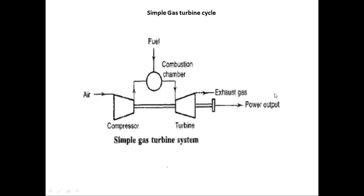This is the simple schematic of the simple gas turbine engine. This type of engine belongs to the open cycle category, where the compressor draws fresh air, combustion takes place in the combustion chamber, expansion is done in the turbine, and exhaust gases are released to the atmosphere. In the case of a closed cycle, the working fluid is recirculated.